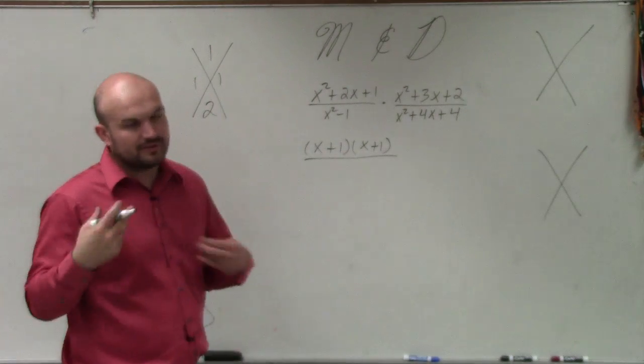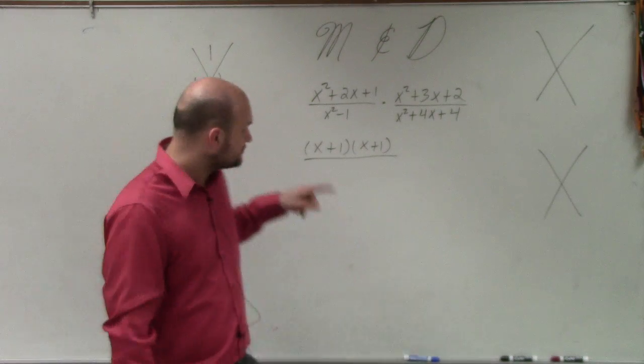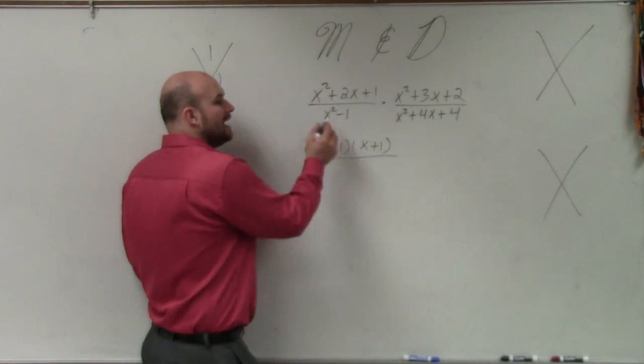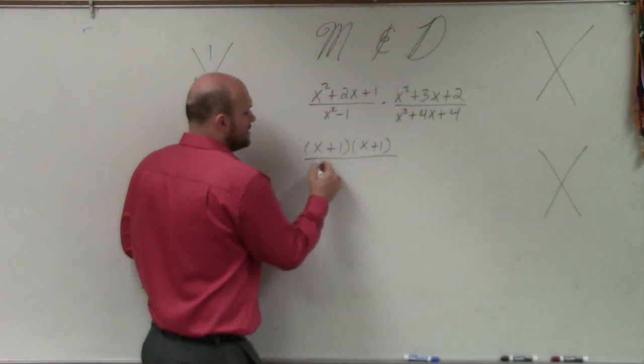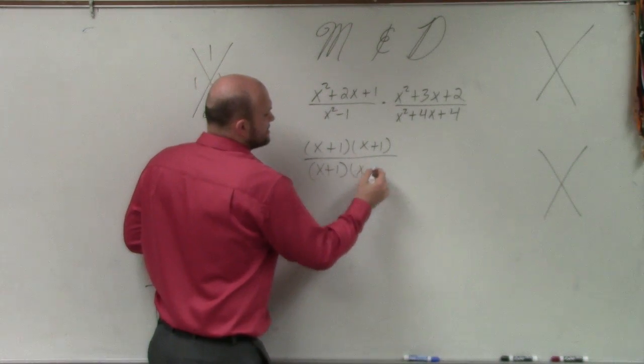And hopefully, you guys will get to the point where you can do a lot of this in your head. In my denominator here, I have x squared minus 1. Again, that's a difference of two squares. x plus 1 times x minus 1.